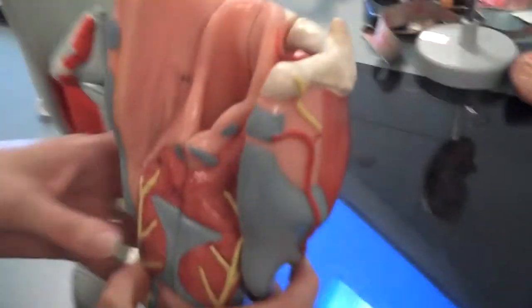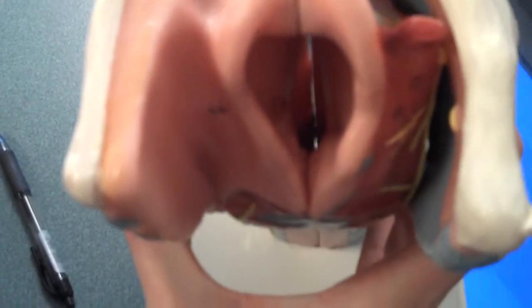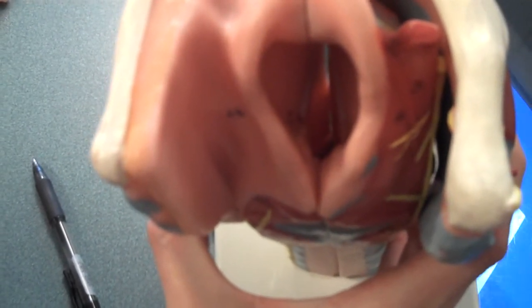Let me show you the inside. If you look down past the epiglottis, you can see the white strips of material. Those are the vocal cords.